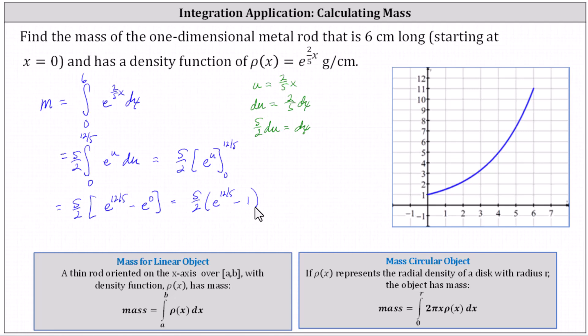And the units here, because the length is in centimeters and the density's in grams per centimeters would be grams. And the approximate mass is 25.0579 grams.